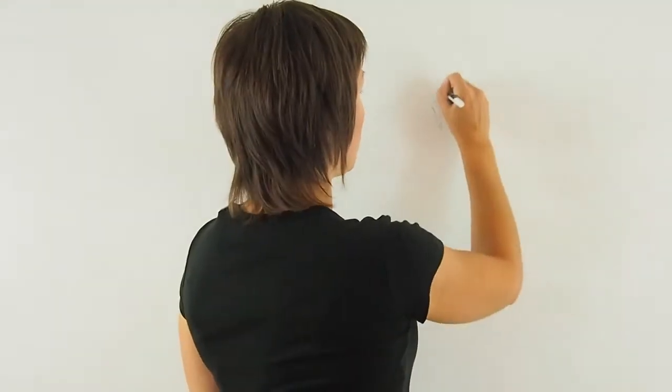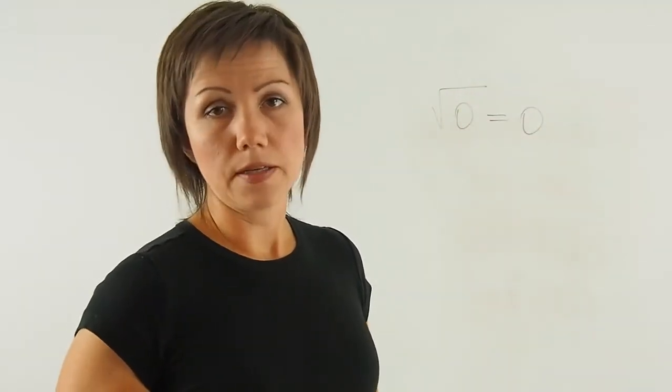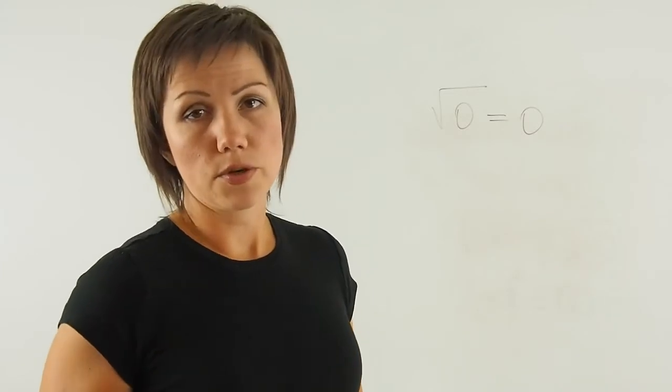If the number under the square root is 0, square root of 0, you will always get 0 as the answer. And it's neither positive or negative, so it's just 0.